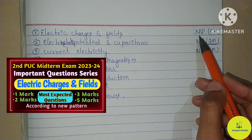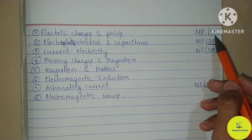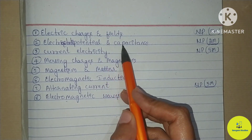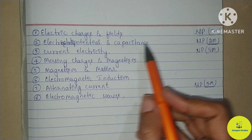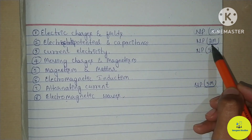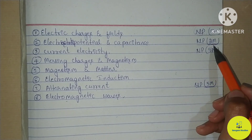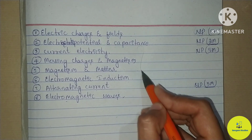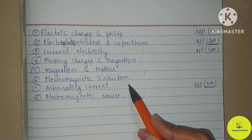5-mark numerical problems are also important, so I will show you how to approach them. This video covers Electrostatic Potential and Capacitance — I will show you the important questions and numerical problems. For 2-mark numerical problems, I will show you a separate video. Remaining 6 chapters I will cover by October 3rd, including current electricity and AC.